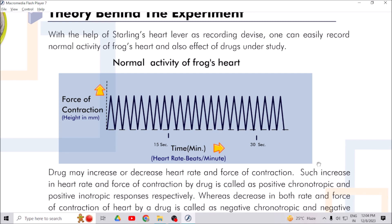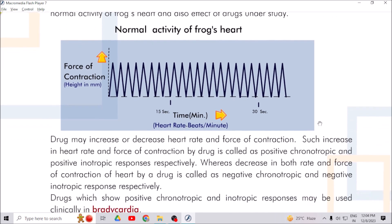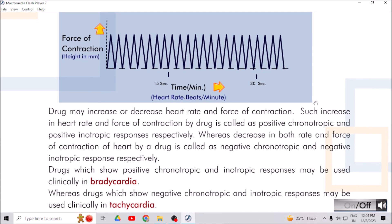Drugs may increase or decrease heart rate and force of contraction. Such increase in heart rate and force of contraction by drugs is called positive chronotropic and positive inotropic responses respectively.